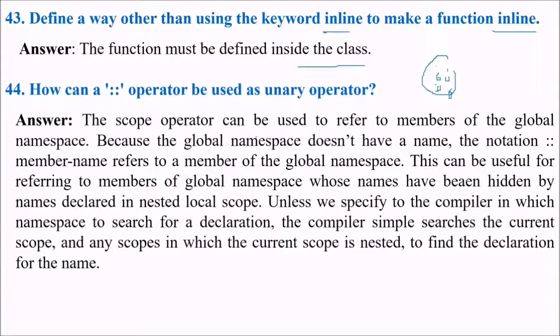The scope operator can be used to refer to members of the global namespace. Because the global namespace does not have a name, this notation, double colon, member name refers to the member of the global namespace. This can be useful for referring the members of the global namespace whose name has been hidden by names declared in the nested local scope.